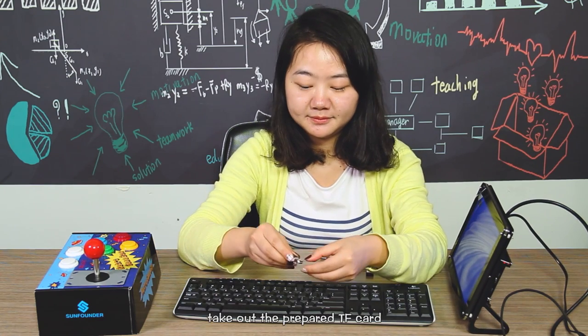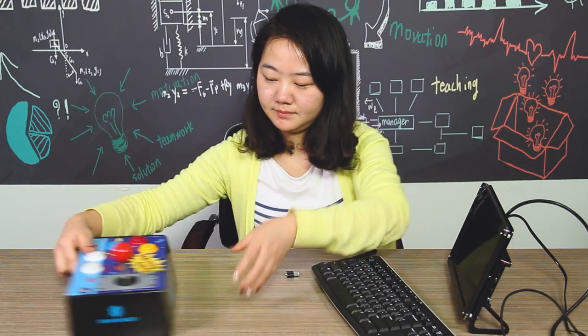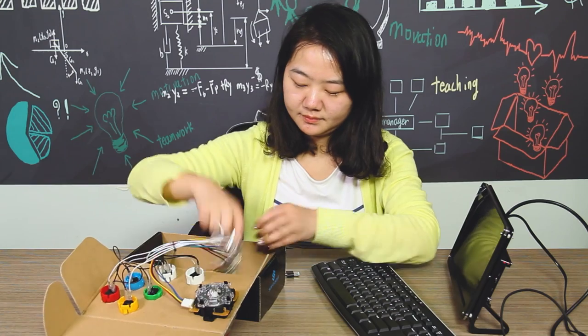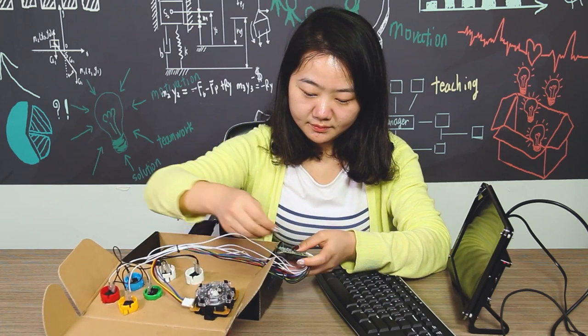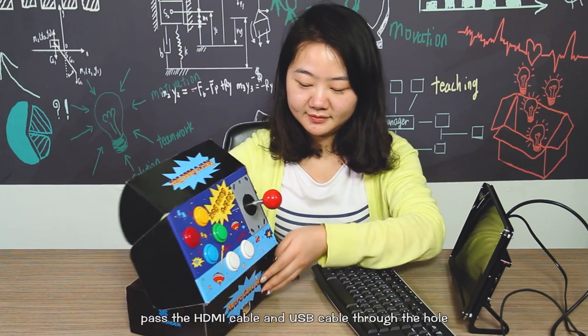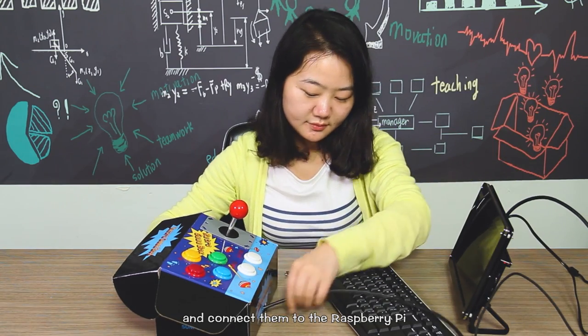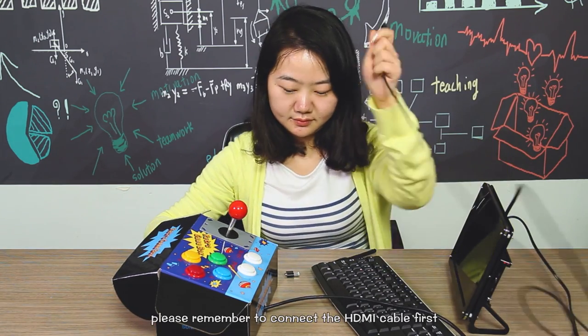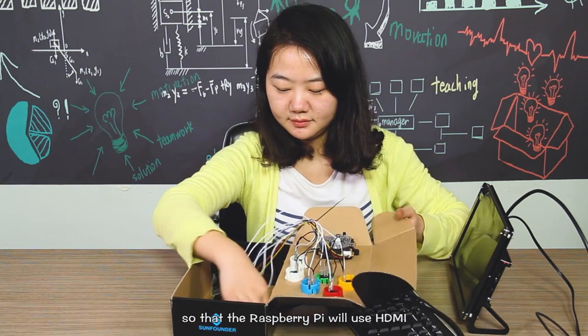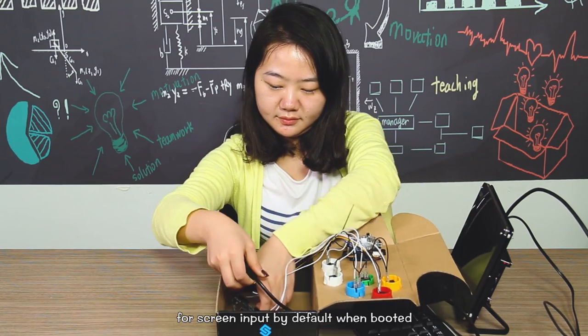Take out the prepared TF card and insert it into the Raspberry Pi. There is a small hole on the back of the box. Pass the HDMI cable and USB cable through the hole and connect them to the Raspberry Pi. Please remember to connect the HDMI cable first, so that the Raspberry Pi will use HDMI for screen output by default when booted.